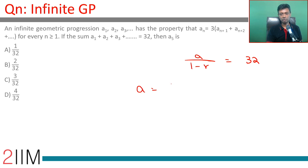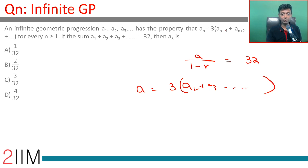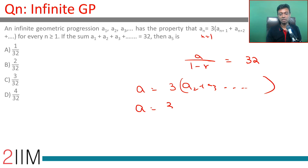Putting n equal to 1: a equals 3 times (a2 plus a3 and so on). This is an infinite geometric sequence with first term a·r and common ratio r, so a equals 3 times (a·r divided by (1 minus r)).